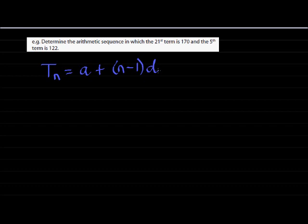All we need to do is find a and d. That is what we're trying to find. Let's see what they've given us. They have given us that the 21st term is equal to 170, and also that the 5th term is equal to 122.